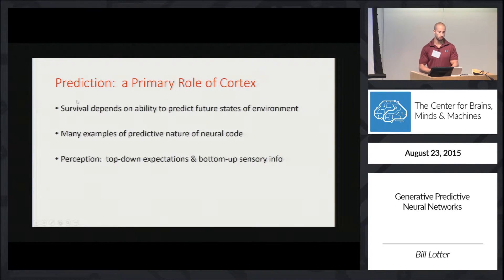Prediction is really a primary role of cortex. Our survival depends on it, and there's many examples of the predictive nature of neural computations. These show that perception is really an interplay of top-down expectations with bottom-up sensory information.